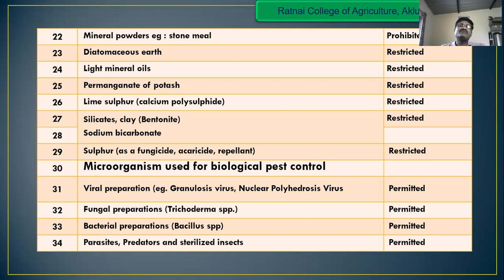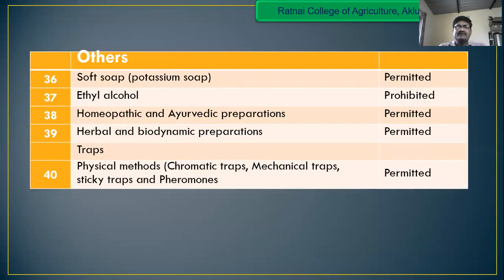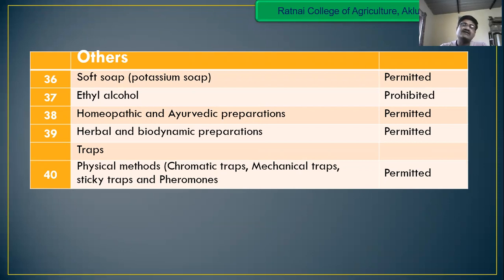For microorganisms used in biological pest control — viral preparations like baculovirus are permitted. Fungal preparations like Trichoderma are permitted. Bacterial preparations like Bacillus are permitted. Parasitic insects are also permitted in the organic environment. Others like soft soaps and potassium soaps are permitted. Copper-based preparations are totally prohibited. Homeopathic and biometric preparations are permitted. Physical methods like chromatic traps and mechanical traps are permitted in organic farming.